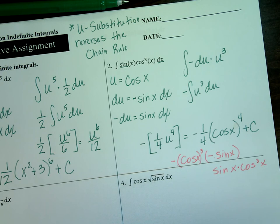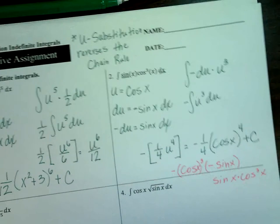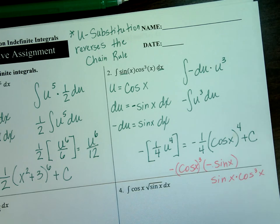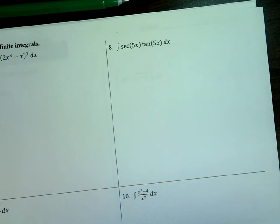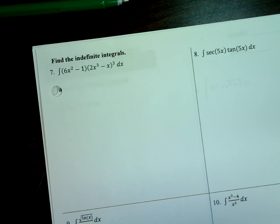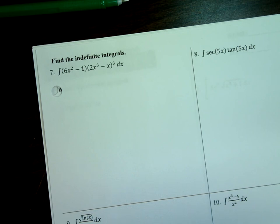Pick me one more from problems 3 to 10 — anything ugly. Number 7 comes out pretty nice actually. For number 7, take the uglier grouping — the larger powered one, especially being cubed. So your u for number 7 is going to be 2x³ minus x, and du comes out to be 6x² minus 1. Seven's not as bad as you think.